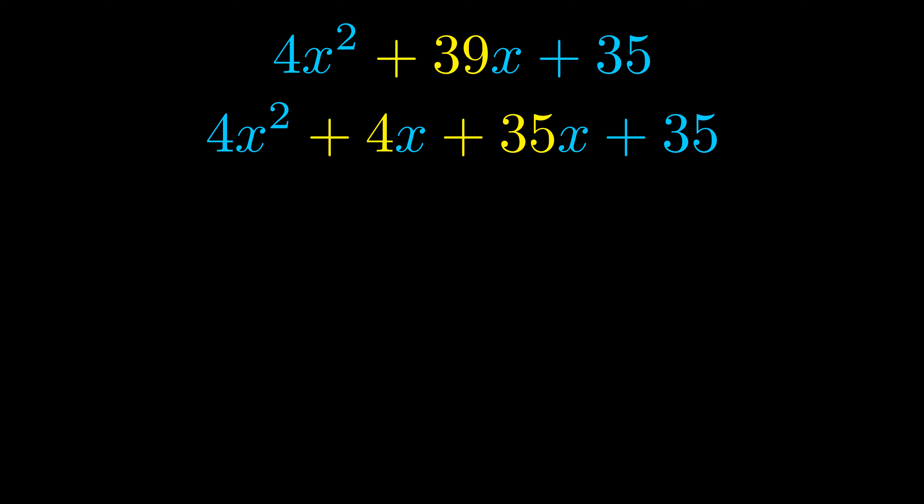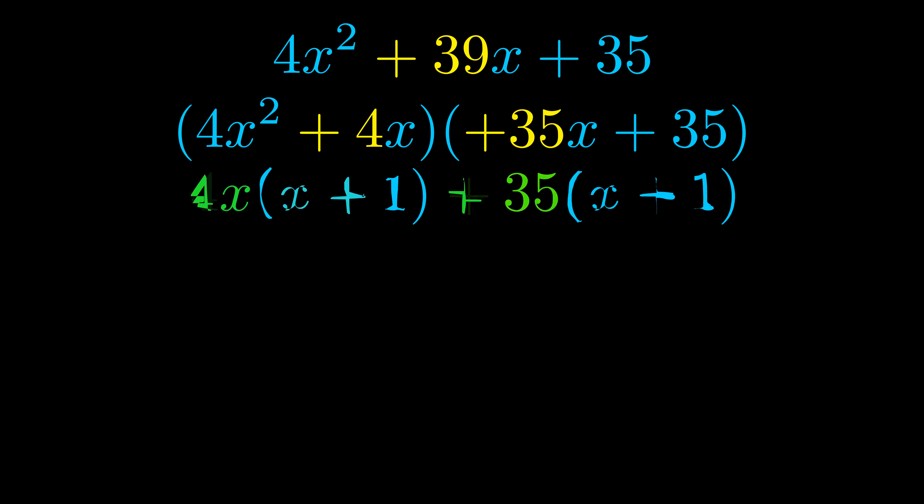Once we've done this, we go ahead and we put parentheses around the first term and the last term. And we do that so that we can take the greatest common factor out of both terms. We can see the greatest common factor is now outside in green.